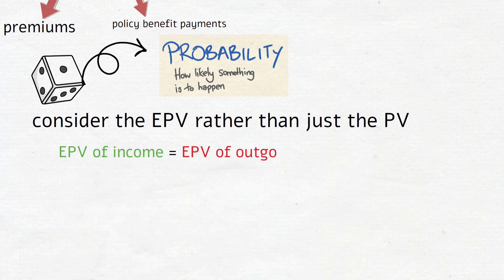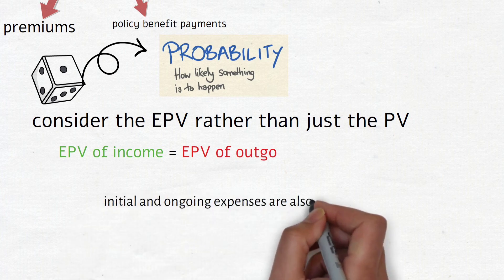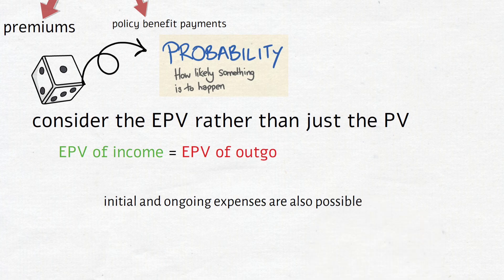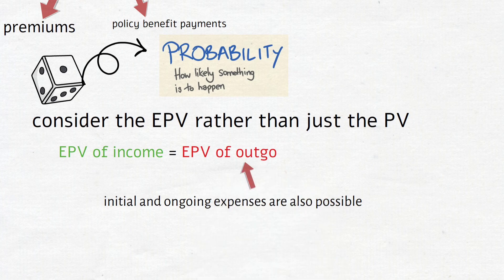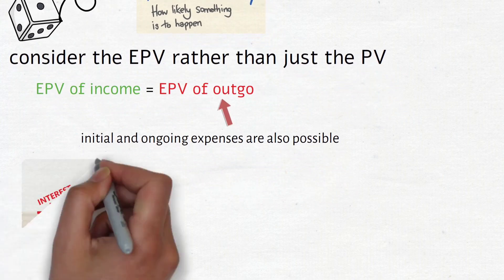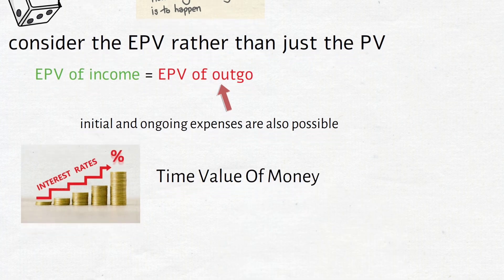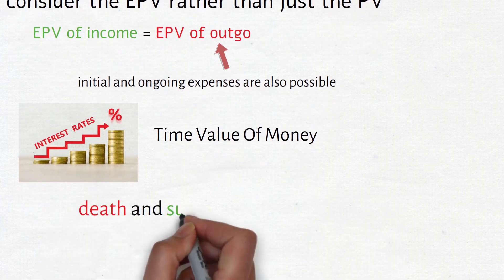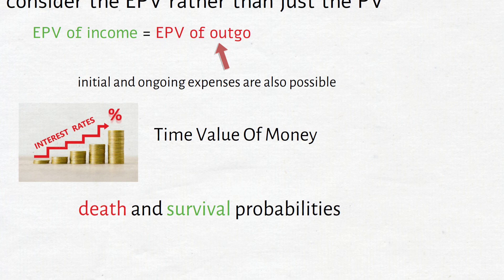In addition to these premiums and the expected benefit payments to policy holders going out, the insurance company will also incur some expenses when writing up these policies. So we need to also consider that on the outgo side of our equation. And then other components that must be considered in our equation of value is the time value of money. Here we are talking about interest rates, and then we also need to consider the uncertainty of the future cash flows. So with this uncertainty of the future cash flows is when we bring in the survival probabilities of a given policy holder.